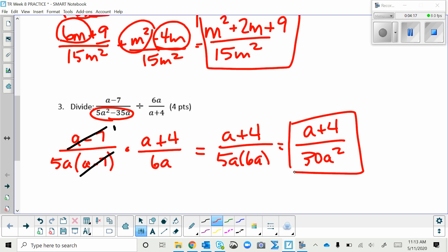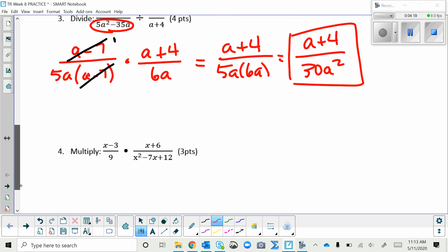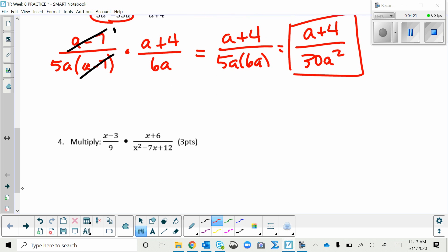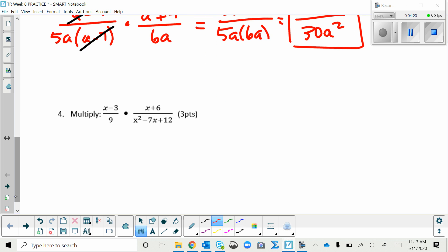Okay, number 4. This is not a keep change flip because it's a multiplication problem. I do, however, need to factor this using my cross method. What multiplies to 12 and adds to negative 7? And it's negative 3 and negative 4. So I rewrite the middle term using those two numbers.